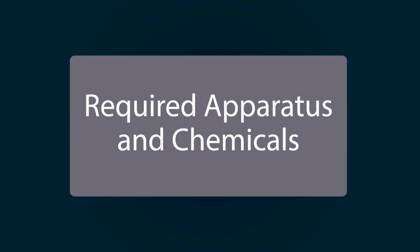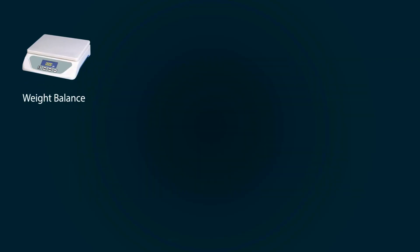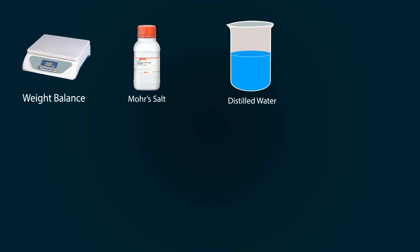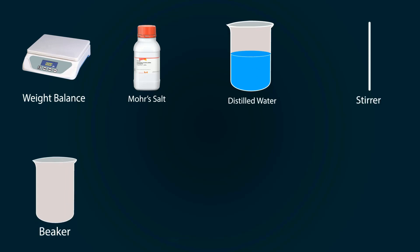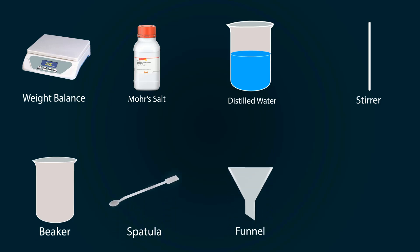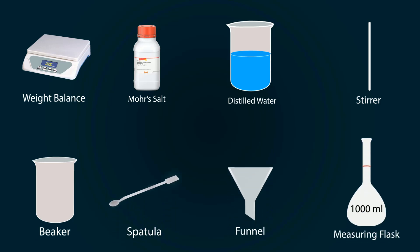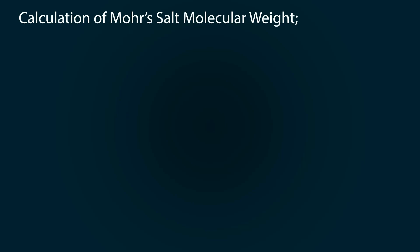The required apparatus and chemicals include a weight balance, Mohr's salt in a bottle, distilled water in a beaker, one stirrer, one empty beaker, a spatula, one funnel, and a volumetric flask of 1000 milliliters. Let's do some calculations.